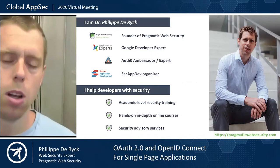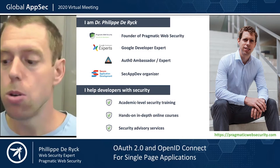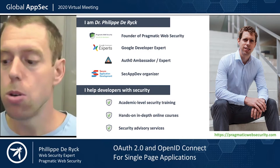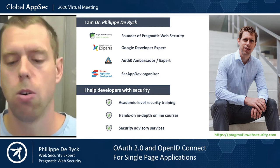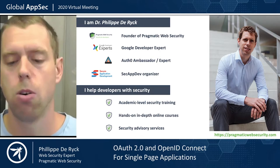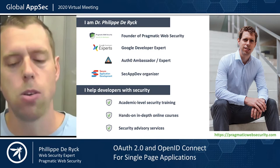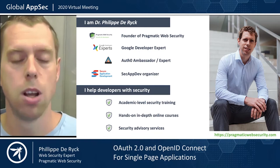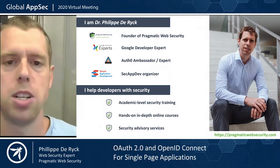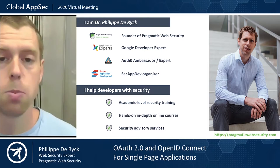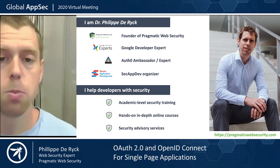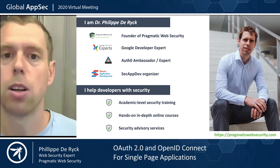Before we dive in, a few small words about myself. I'm Philippe Dreyck, I'm from Belgium, and I used to travel the world to help people with security. I did a PhD in security, and since a few years I'm running my own consulting and training company called Pragmatic Web Security. I teach developers how to build secure applications, create online courses, and deliver security advisory services. Notably, I'm a Google Developer Expert and an Auth0 ambassador, which means these outreach programs recognize my contributions for security and identity to the community.